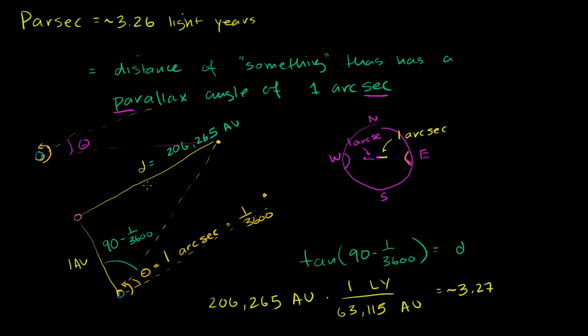But that's where the parsec comes from. So hopefully now you just realize it is just a distance. But even more, you actually understand where it comes from. It's the distance that an object needs to be from Earth in order for it to have a parallax angle of one arc second. And that's where the word came from. Parallax arc second.